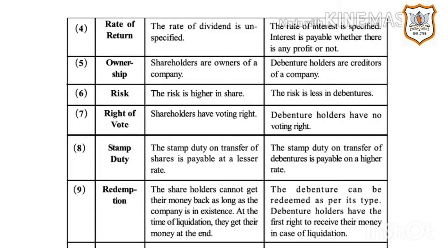Eighth point — Stamp Duty: The stamp duty on transfer of shares is payable at a lesser rate, whereas the stamp duty on transfer of debentures is payable at a higher rate. Ninth point — Redemption: Shareholders cannot get any money back as long as the company is in existence.